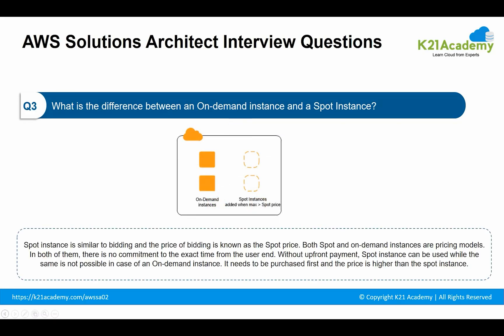The next question: what is the difference between an on-demand instance and a spot instance? Spot instances work similar to bidding, and the price of bidding is known as the spot price. Both spot and on-demand instances are pricing models. The advantage of spot instances is that they are cost-effective, but the drawback is that they can terminate at any time. If the spot price becomes more than the bid price, the instance can terminate within 2 minutes of notice. On-demand instances are available whenever you require them and you pay for the time you use them on an hourly basis. These instances can be released when no longer required, do not require any upfront commitment, and their availability is guaranteed by AWS unlike spot instances.